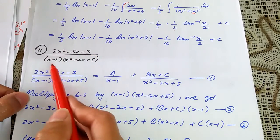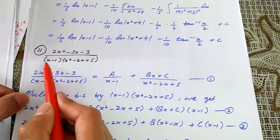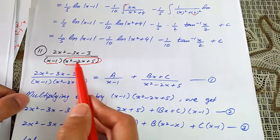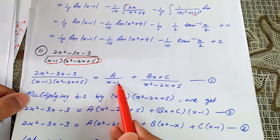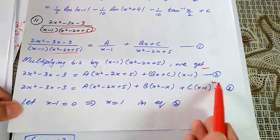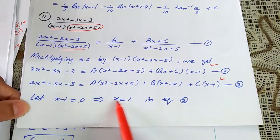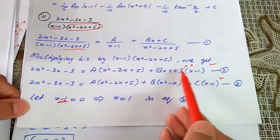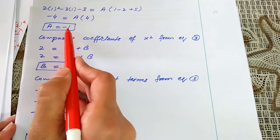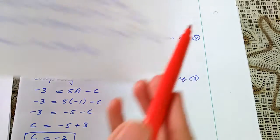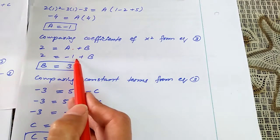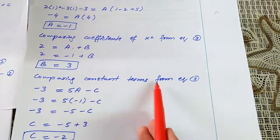Question 11: integrate (2x² - 3x - 3)/((x - 1)(x² - 2x + 5)). Since x² - 2x + 5 cannot be factored further, write partial fractions as a/(x - 1) + (bx + c)/(x² - 2x + 5). Multiply through by the denominator to get equation 2, then expand to equation 3. Let x = 1; substitute into equation 2, giving a = -1. Comparing x² coefficients: 2 = a + b, so b = 3.